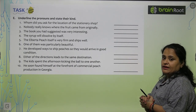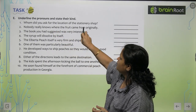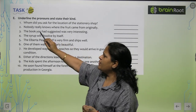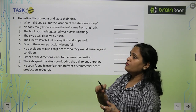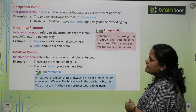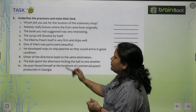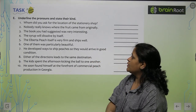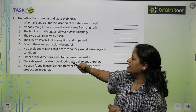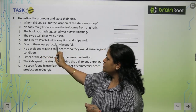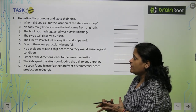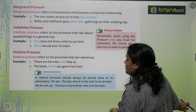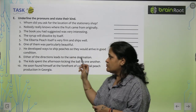Now underline the pronouns and state their kind. 'Whom did you ask for the location of the stationary shop?' — Whom is an interrogative pronoun. 'Nobody really knows where the food comes from originally.' — This is an indefinite pronoun. 'The book you had suggested was very interesting.' — Find and do this one yourself. 'One of them was particularly beautiful.' — Like 'each of the children has received a toy,' similarly 'one of them was particularly beautiful' — this is a distributive pronoun.